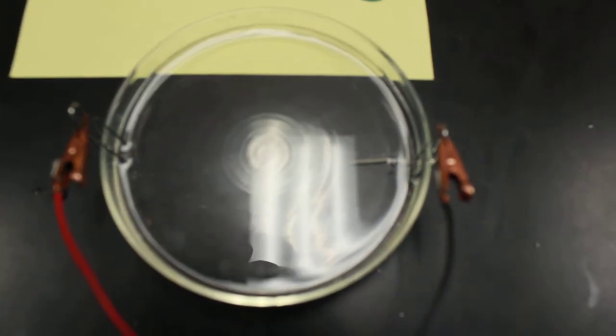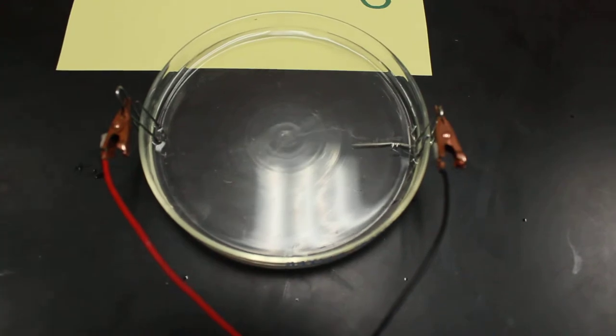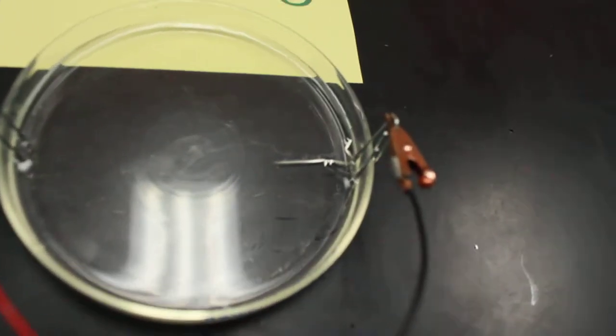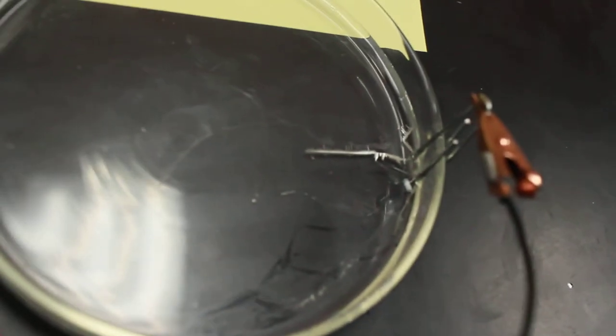And after a minute or so, we're going to switch the polarity of electrodes, just by simply changing which paperclip leads are attached to which side.